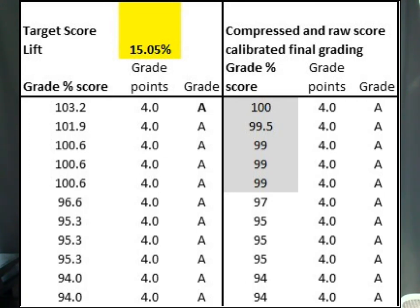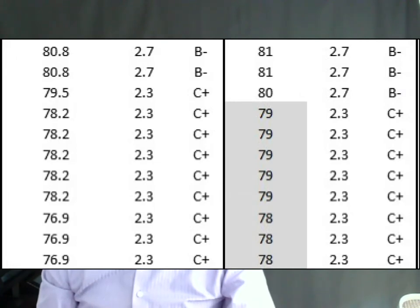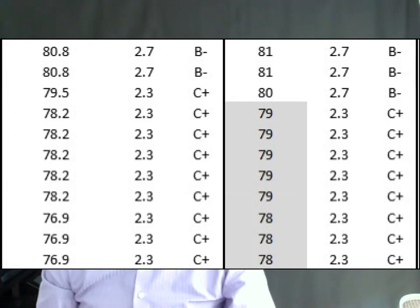The same thing happens at the bottom — we need to lift those scores up. The bottom student has 76.9, which I lift up to 78, about a one-point lift. The three lowest students share the same percentage score, so they all get the corrected score of 78. The next one has a distance of about one, so I lift that up to 79. The next four students get 79. Then from 78.2 to 79.5, I lift that up to 80, and from there on we hit the actual rounded scores.